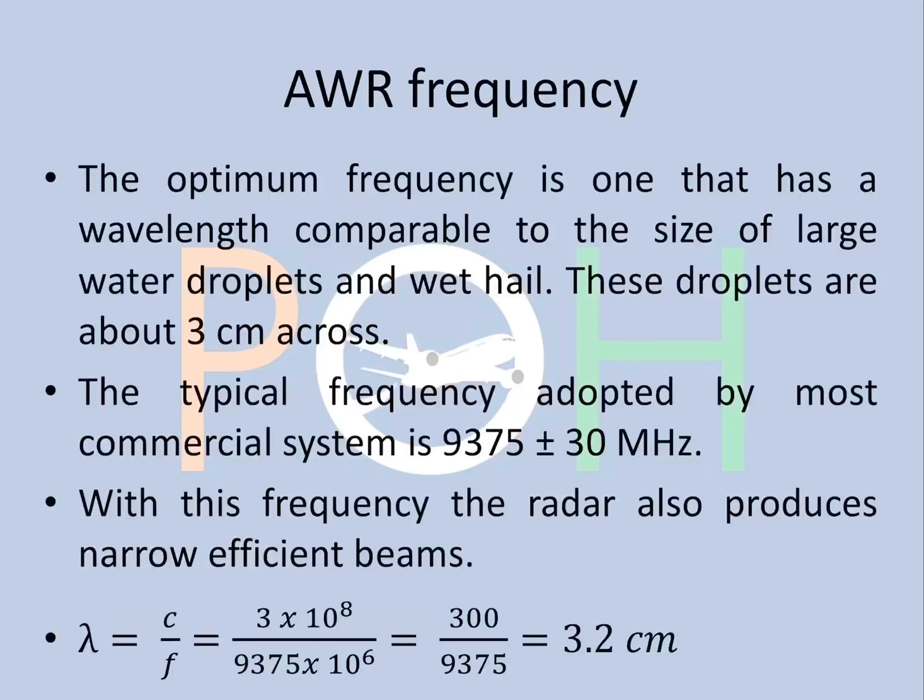The optimum frequency is one that has a wavelength comparable to the size of large water droplets and wet hail. These droplets are about three centimeters across. The typical frequency used is 9375 plus or minus 30 megahertz. With this frequency the radar also produces narrow efficient beams. Putting it into λ = c/f, with c being the speed of light, we get a wavelength of around 3.2 centimeters, which is pretty much the size of a water droplet.